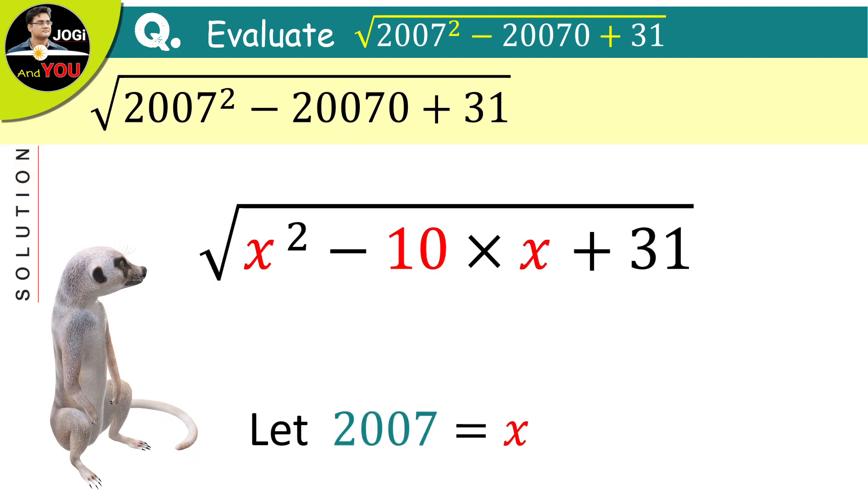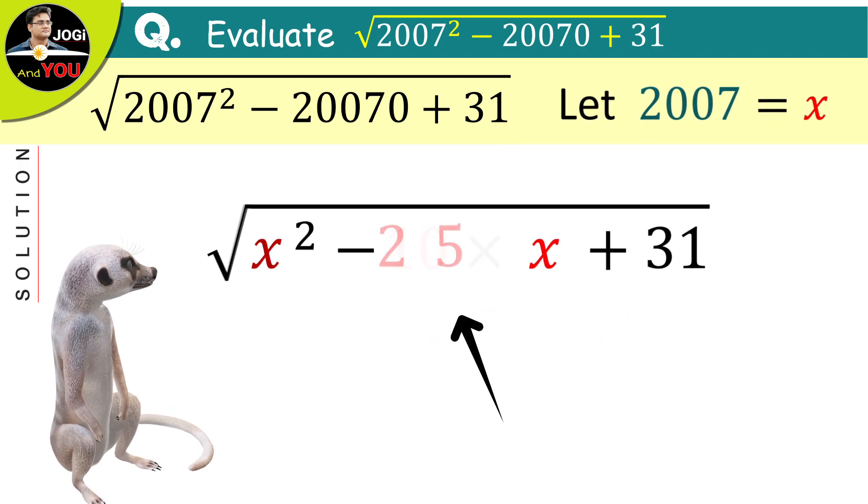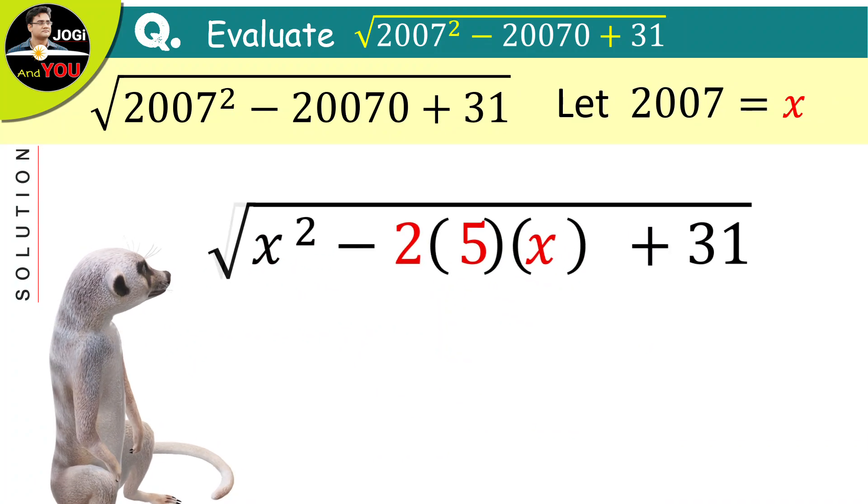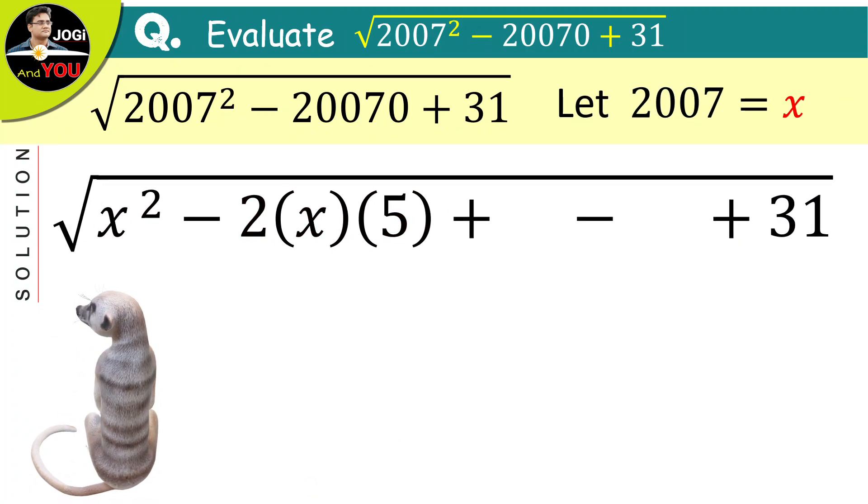Keep this thing aside here and now factor this 10 as 2 and 5. Rearrange it a bit and observe this part carefully.